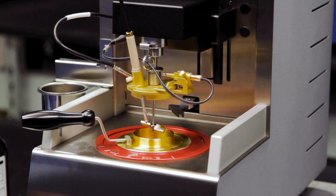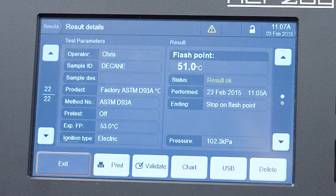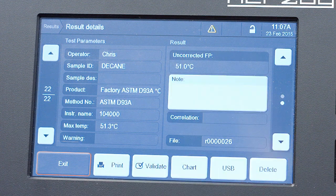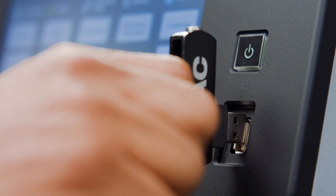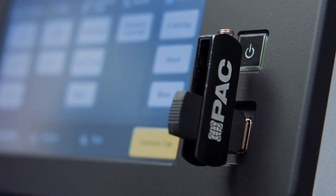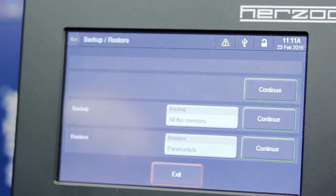OptiFlash also includes an ambient pressure sensor, which enables automatic flashpoint correction for ambient pressure. Its features, like LIMS communication and the USB drive, make it simple for users to export and share data.